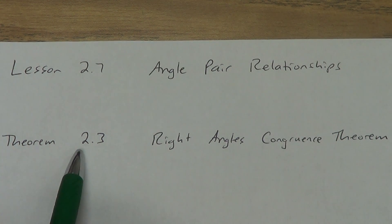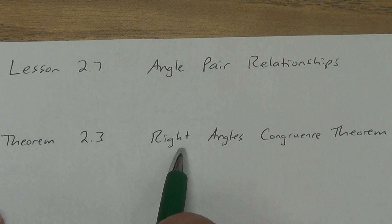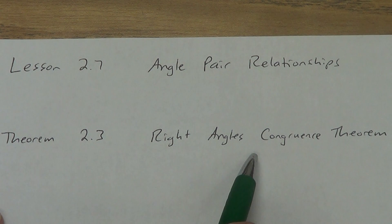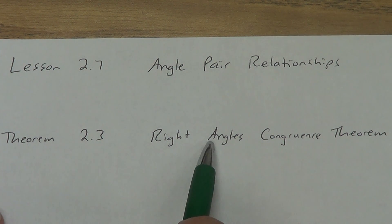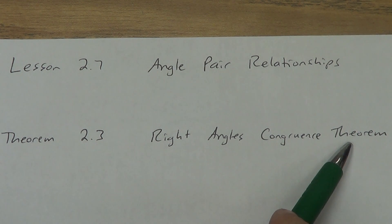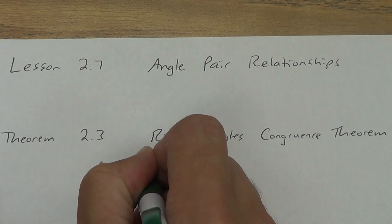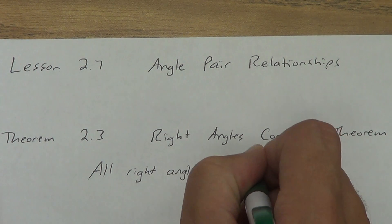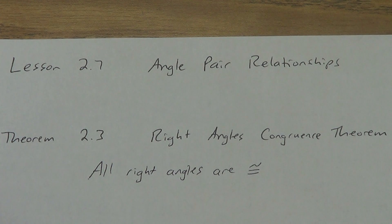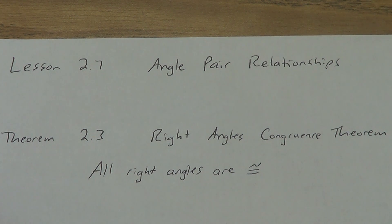The first one is called Theorem 2.3. Remember, do not memorize them by number — I don't have them memorized by number either. This is called the Right Angles Congruence Theorem. You can memorize it by name or by what it says. This name kind of gives it away: all right angles are congruent. You could put it into an if-then statement: if two angles are right angles, then they are congruent to each other. That's all it says — really simple. We're going to prove that later on.